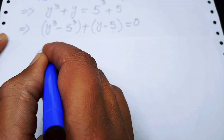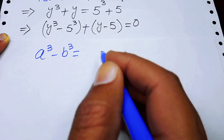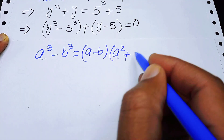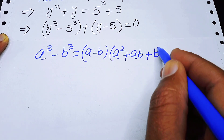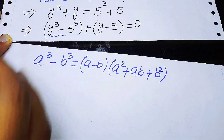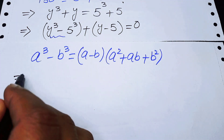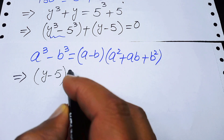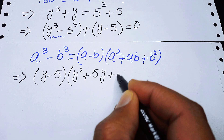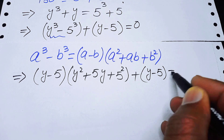We apply the well-known difference of cubes formula: a cubed minus b cubed equals a minus b, times a squared plus ab plus b squared. Applying this to y cubed minus 5 cubed, we get y minus 5, times y squared plus 5y plus 25, plus y minus 5, equals 0.